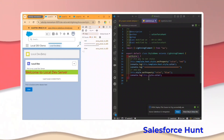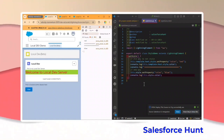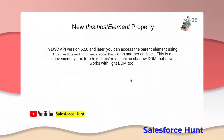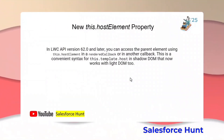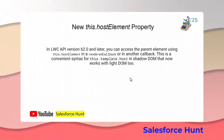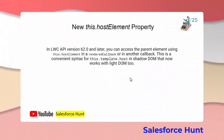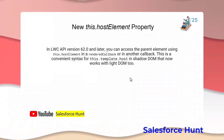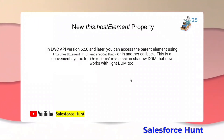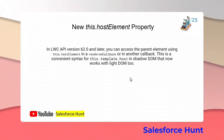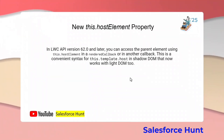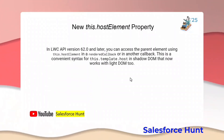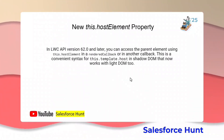The next new feature is `this.hostElement`. In LWC API version 62.0 and later, you can access the parent element using `this.hostElement` in a render callback or any lifecycle hook. It's a very convenient syntax — a simplification of `this.template.host` to `this.hostElement`, and it now works with Lightning DOM too.